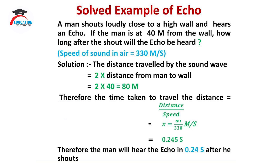A man shouts loudly close to a high wall and hears an echo. If the man is at 40 meters from the wall, how long after the shout will the echo be heard? The speed of sound in air is given as 330 meters per second. The distance traveled by the sound wave is equal to 2 times the distance from man to wall, which is 2 into 40, equal to 80 meters.